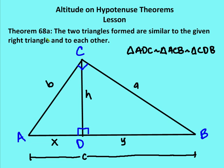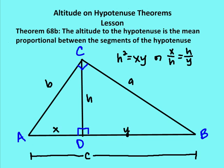Theorem 68A states: the two triangles formed are similar to the given right triangle and to each other. We've already proven that triangle ADC is similar to ACB, which is similar to CDB. For students, you can simply state 'altitude and hypotenuse theorem' as your reason in a two-column proof. It may be numbered differently in other textbooks, but in our book it's 68A.